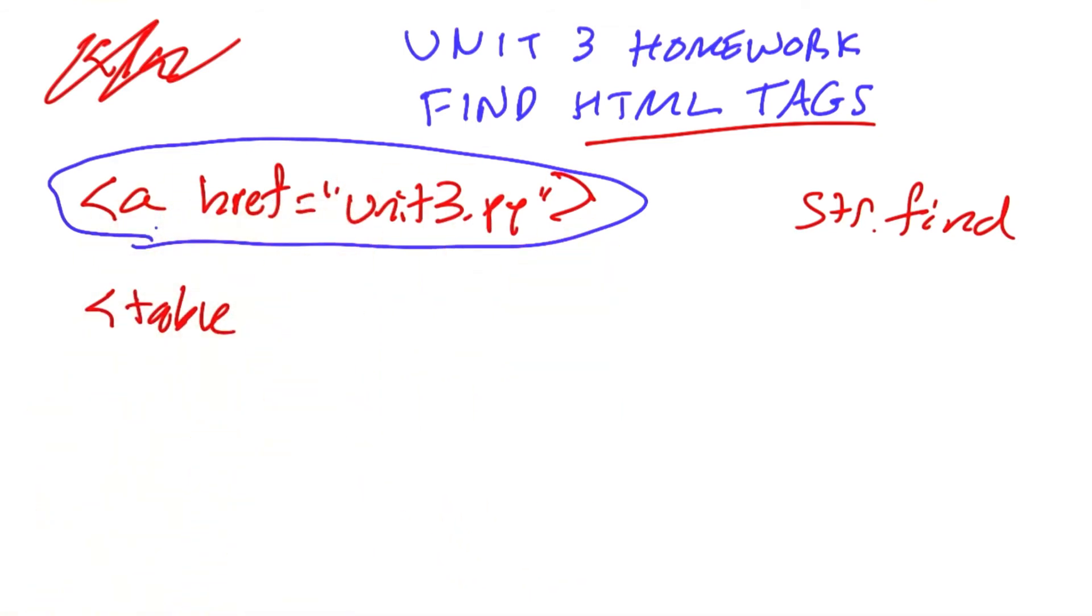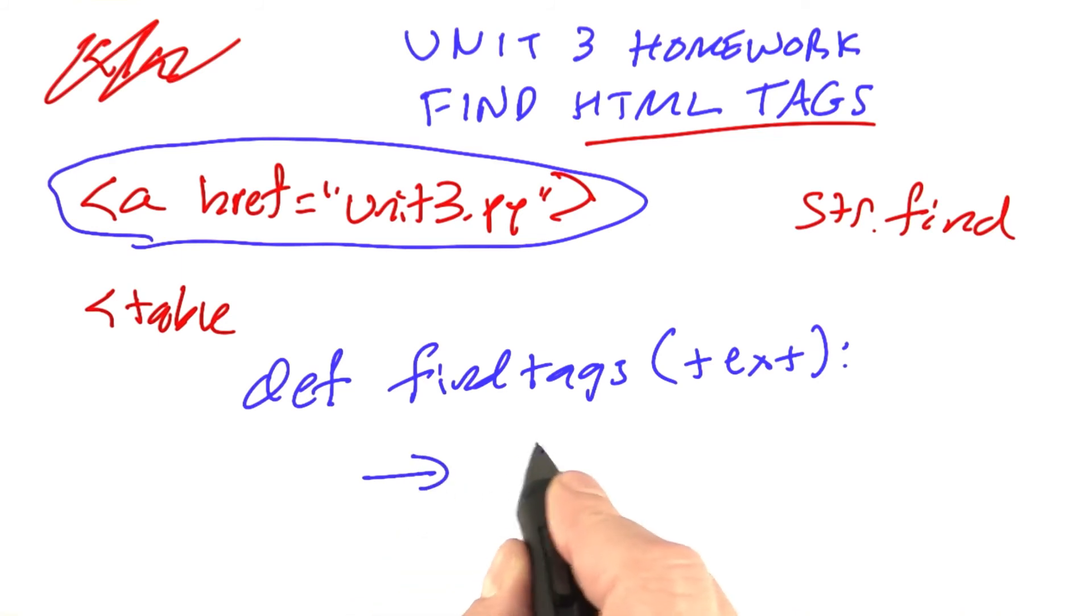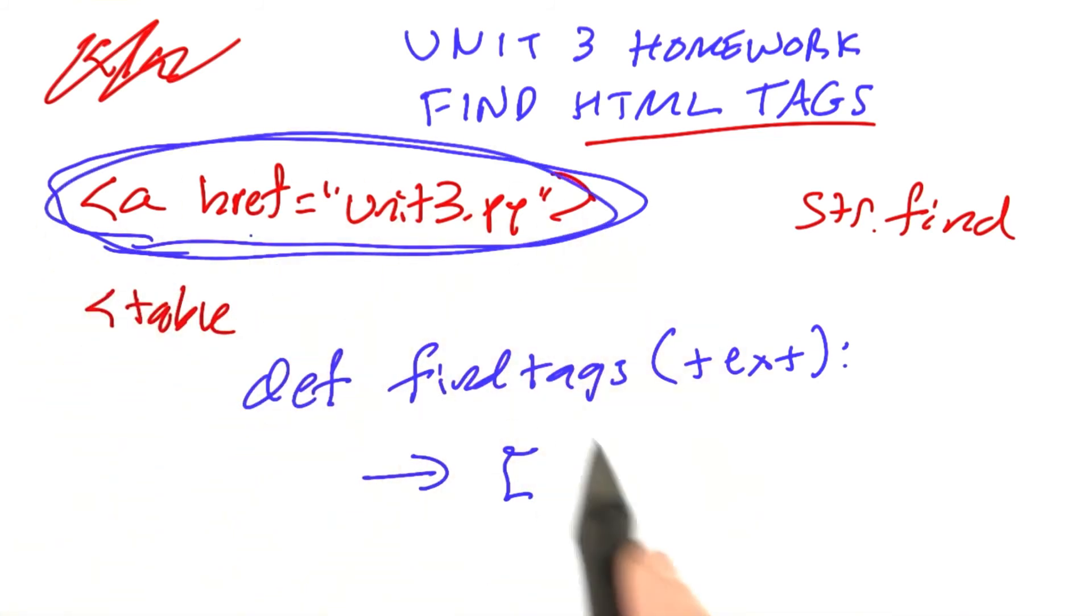I want you to write a function, call it find tags, which you pass a text, and then it returns a list of strings that look like that that come out of the text.